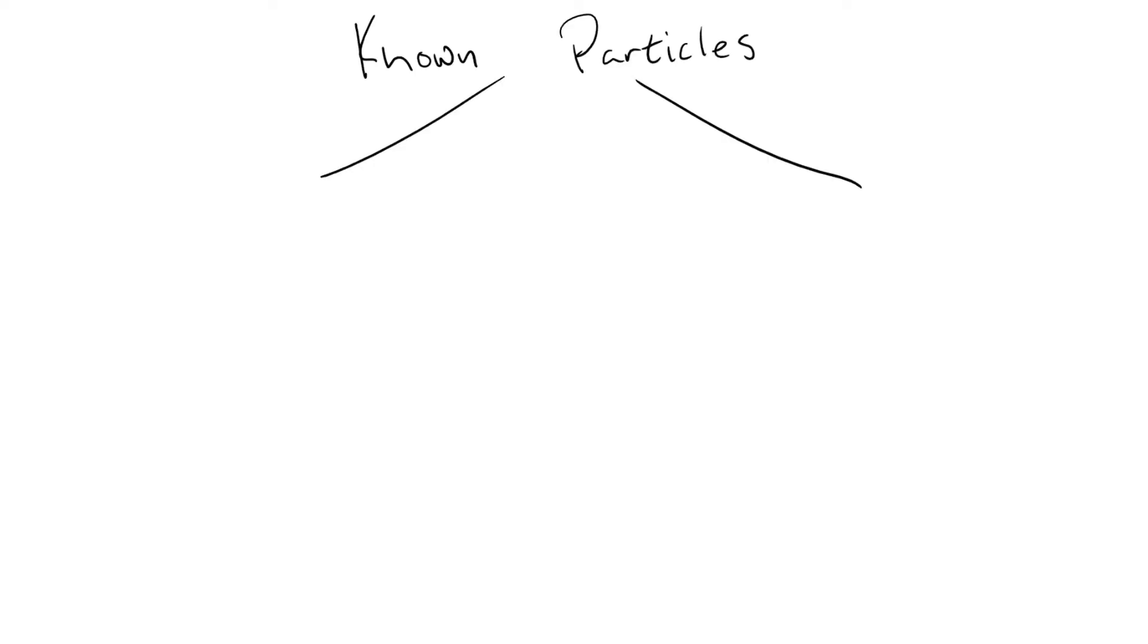Everything in our universe is made up of particles, and these particles come in two different types: fermions and bosons.